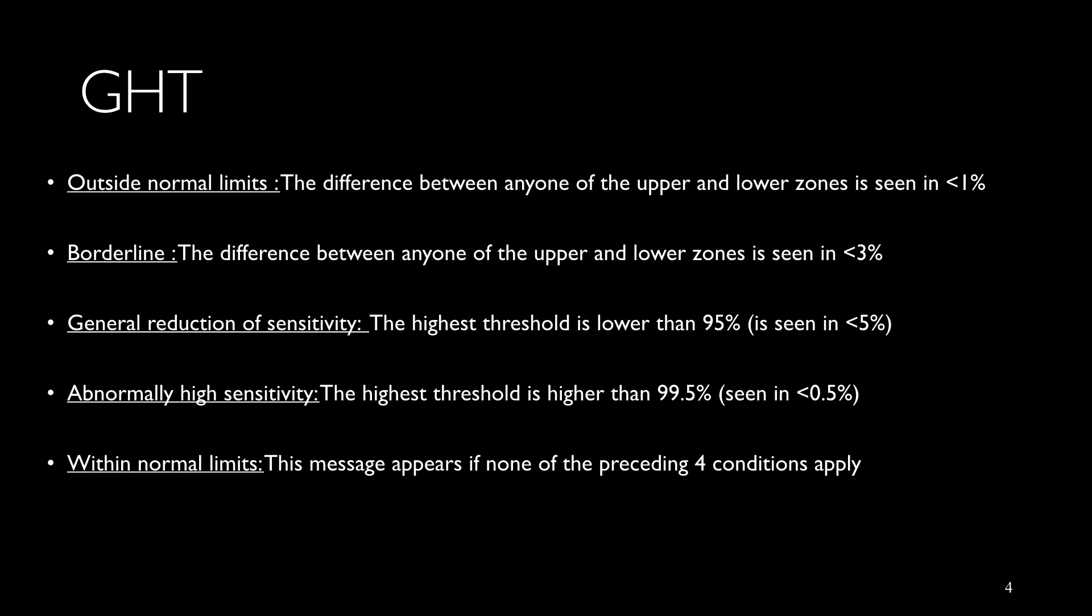When the difference between any one of those upper and lower zones is seen in less than 1% of the normal database, it's called outside normal limit. When it's seen in less than 3%, it's called borderline.